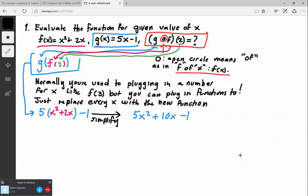So that's our new function. We're gonna actually call that big F. Big F of x, not lowercase f, capital F, is equal to the composite function 5x squared plus 10x minus 1.